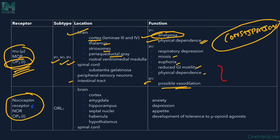The nociceptin receptor (opioid 4, ORL) is present in the brain — cortex, amygdala, hippocampus, septal nuclei, habenula, and hypothalamus — and in the spinal cord. It is responsible for anxiety, depression, appetite regulation, and development of tolerance to mu opioid agonists.